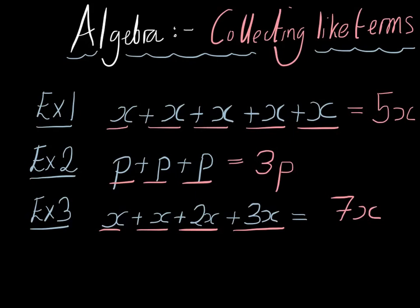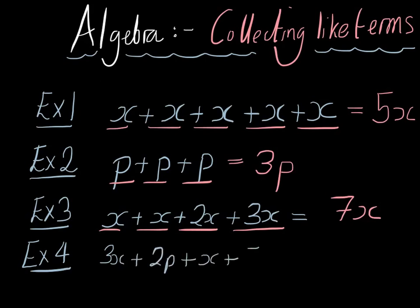And let's do one more example, maybe where we have x's and p's together. So example 4. Say we have 3x plus 2p plus x plus 5p. What would we have? Well firstly deal with x's. We have 3x and we add another x. Always underline the symbol before your variable x. So we have 3x plus another x is equal to 4x.